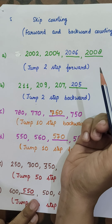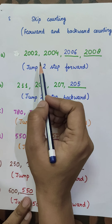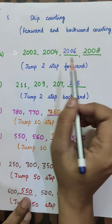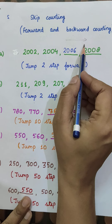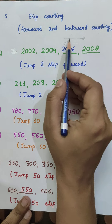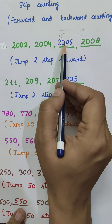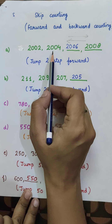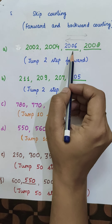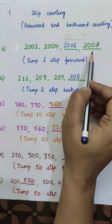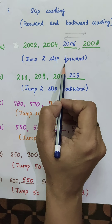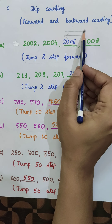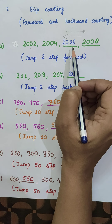We add the same number each time to the previous number. The question involves forward counting and backward counting. The first question shows: 2002, 2004, ___, 2008 — and the instruction says jump two steps forward. Forward means we add plus two each time.